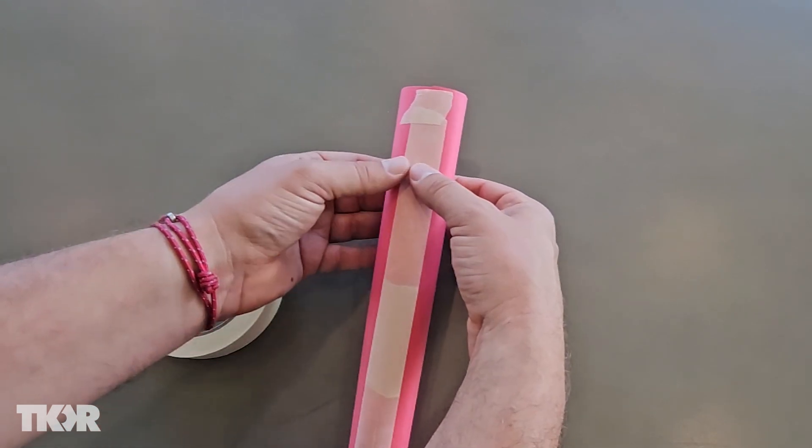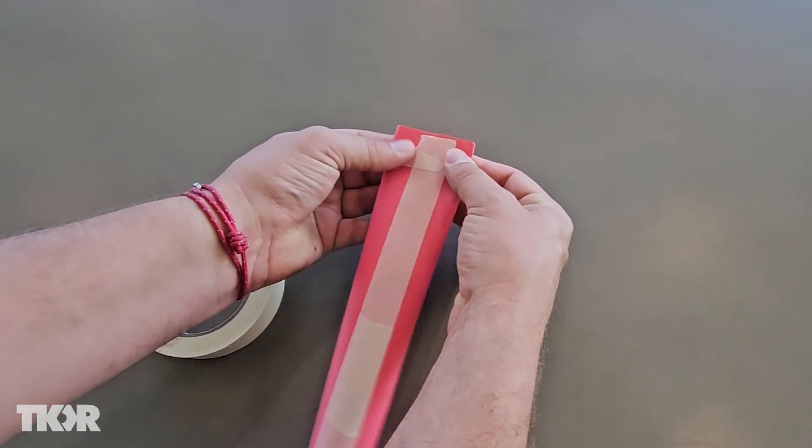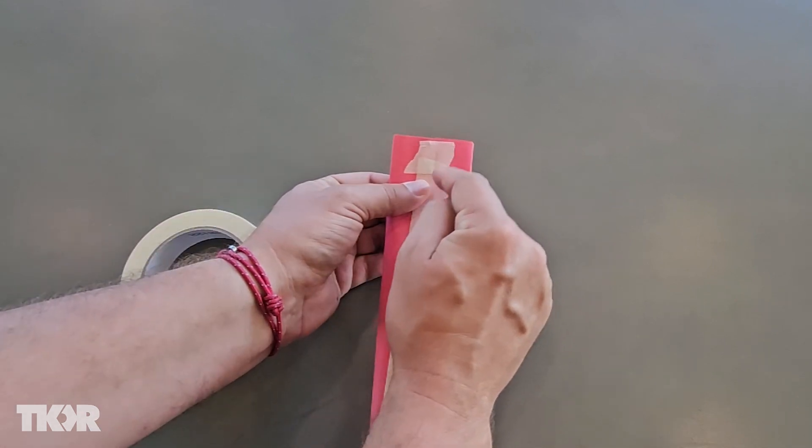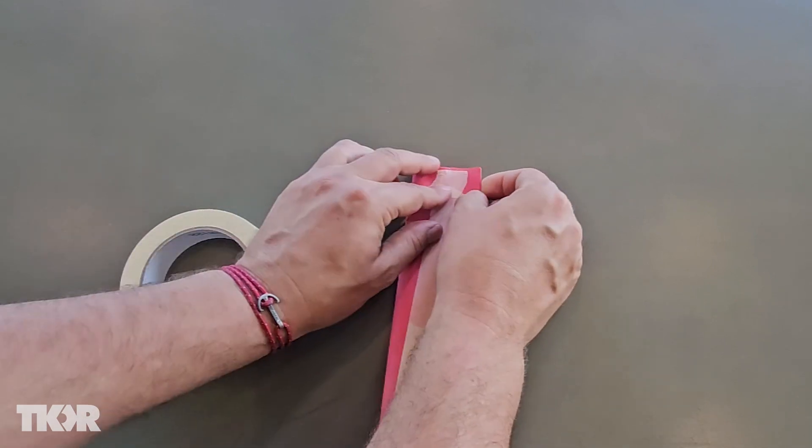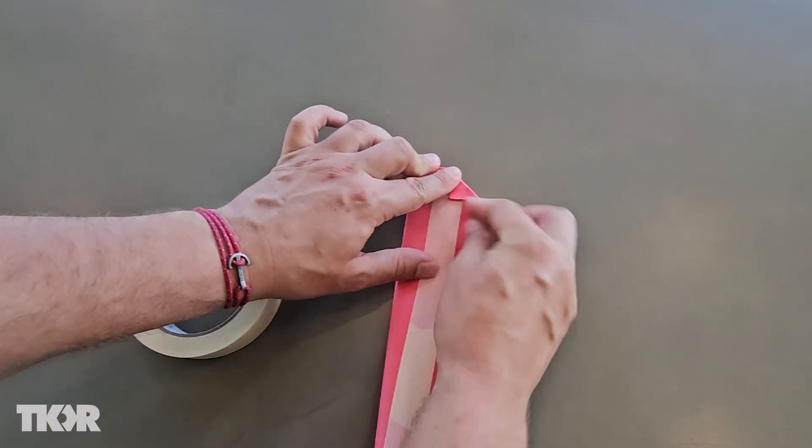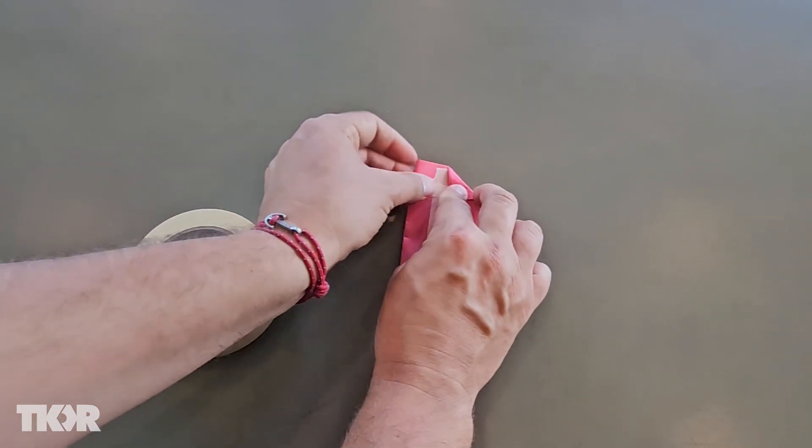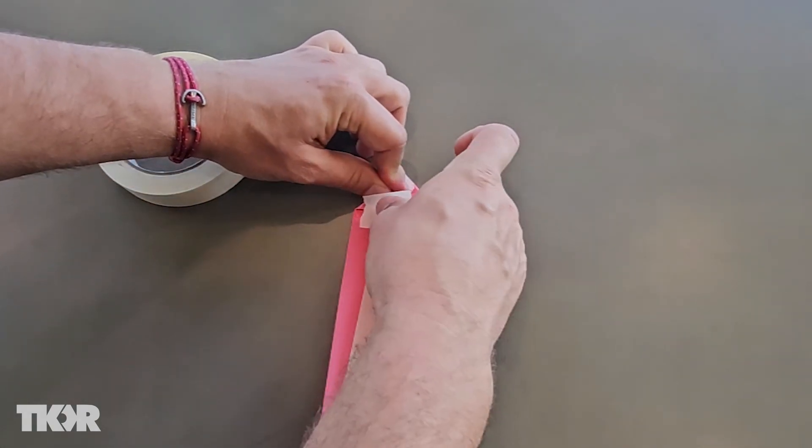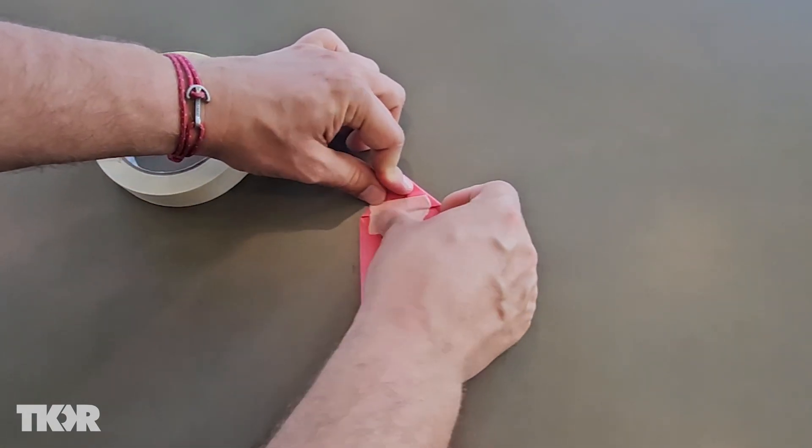It's now time to build your nose cone. Take one end of your tube and flatten it out. Take each corner of that flattened area and fold them down towards the middle like you're making a paper airplane. Once you have those folds in place, use some more masking tape to secure them, again making sure that no air can escape.